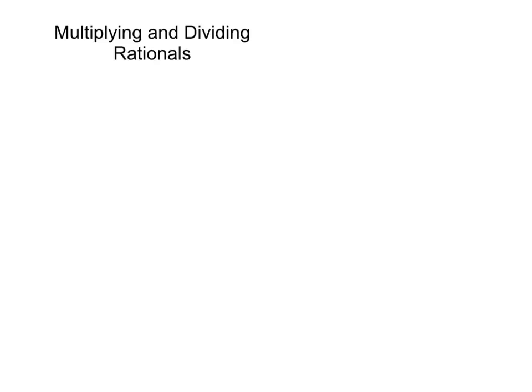Multiplying and dividing rationals means multiplying and dividing fractions, so let's start out with some numbers, just like you did in elementary school. Say I had the fraction 2 over 3, and I wanted to multiply it by the fraction 6 over 5. When we multiply fractions, we multiply the numerators and we multiply the denominators. So in this case, I'm going to do 2 times 6, which is 12, and 3 times 5, which is 15.